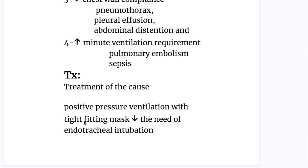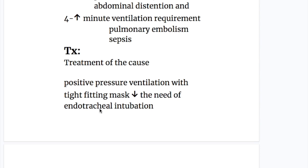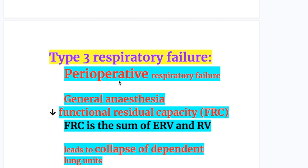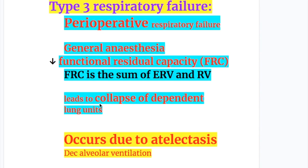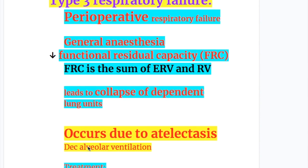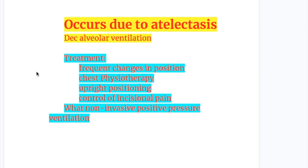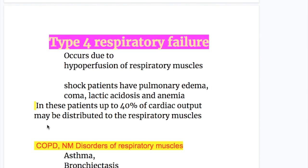Treatment of organ failure is treatment of the cause. Positive pressure ventilation with a tight-fitting mask decreases the need for endotracheal intubation. Type 3 respiratory failure is also known as perioperative respiratory failure. General anesthetics decrease the functional residual capacity, which is the sum of expiratory reserve volume and residual volume. This leads to collapse of dependent lung tissues due to atelectasis. Treatment includes frequent changes in position, chest physiotherapy, upright positioning, and control of incisional pain.